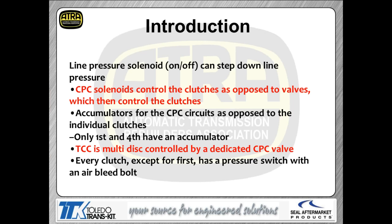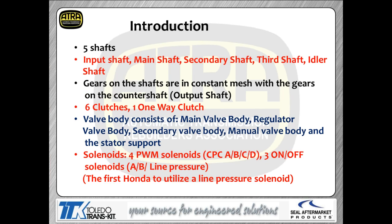You're going to have a multiple-disc clutch inside the converter itself, very similar to some Mercedes and other transmissions. It's self-contained within the converter. Every clutch except first has a pressure switch and an air bleed bolt — they've actually drilled holes into the bolts to bleed air right out of the circuit so they don't have problems with aeration in the transmission feed circuit.